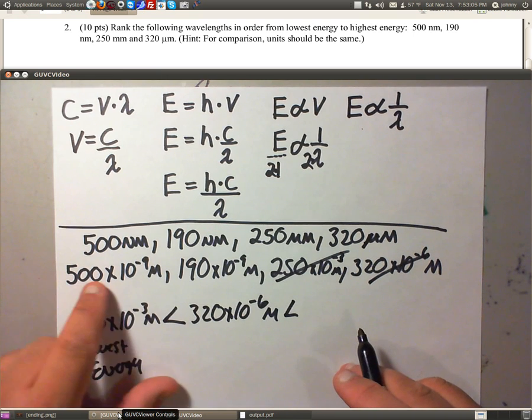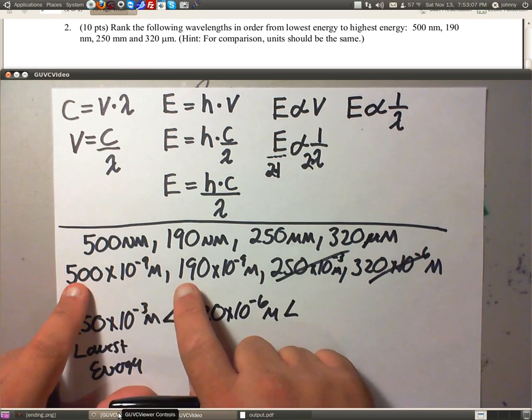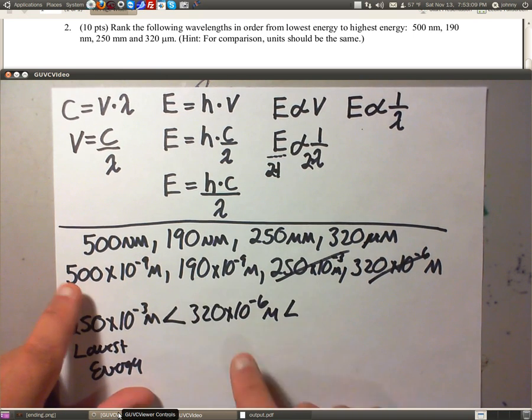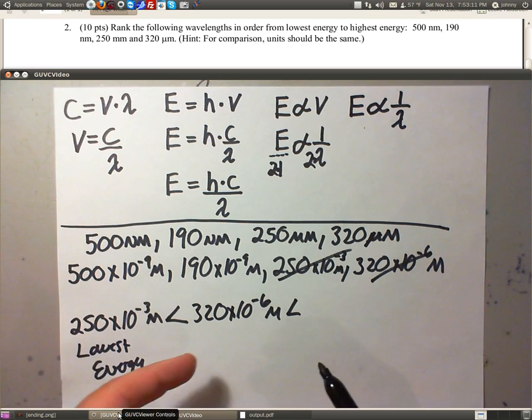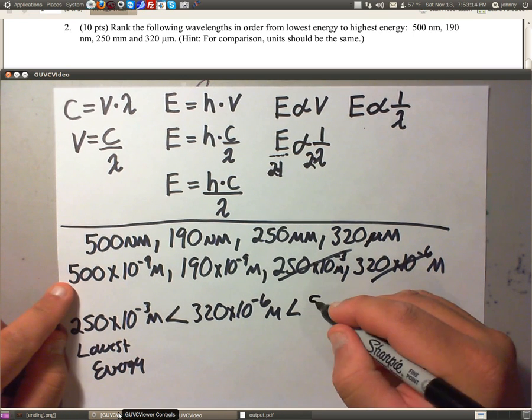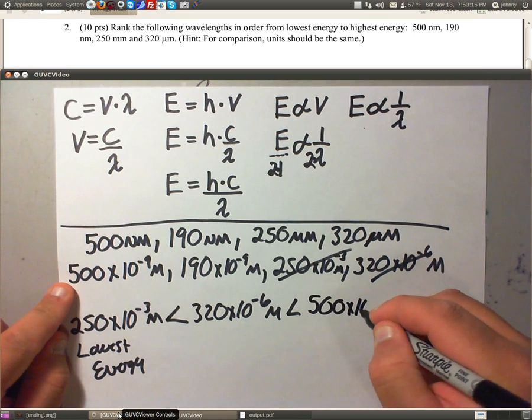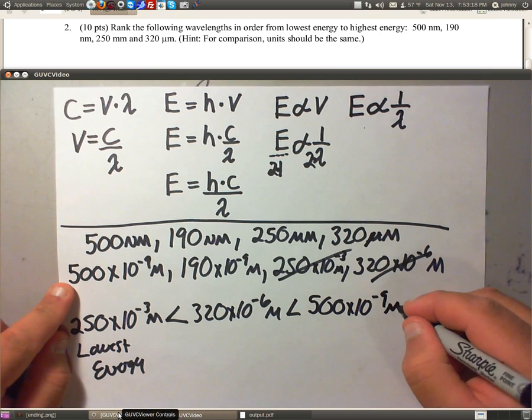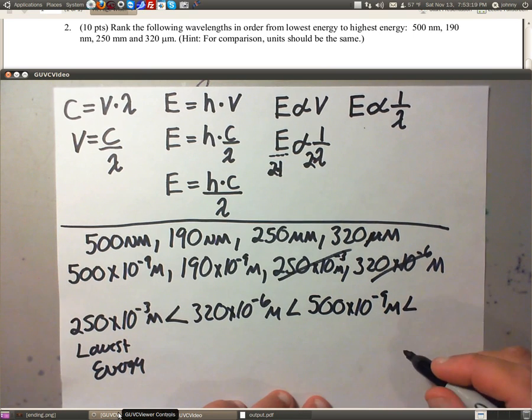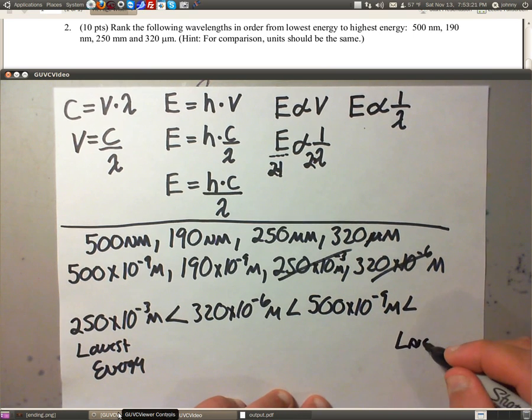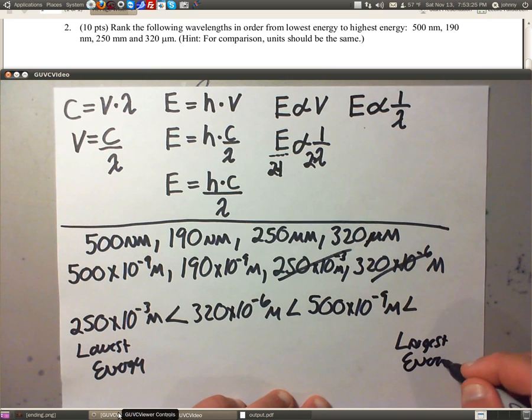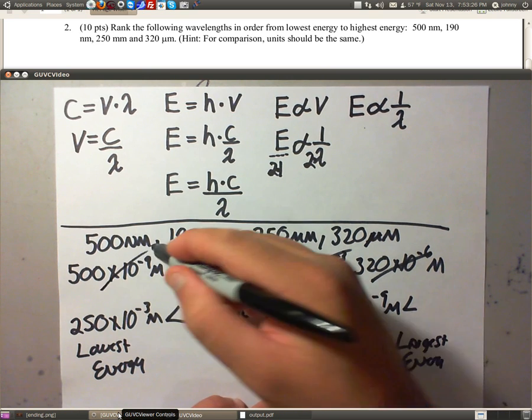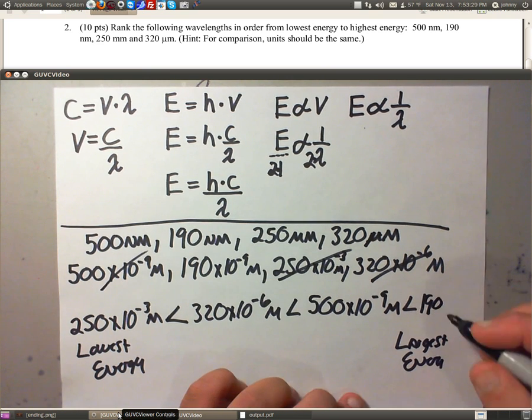Then it's going to be this 500, because remember, it's larger than this. So 500 times 10 to the negative 9 meters. And finally, the one with the largest energy is our 190 here.